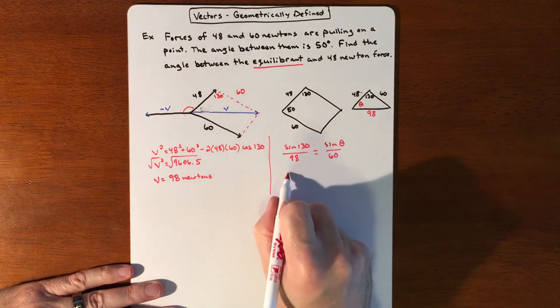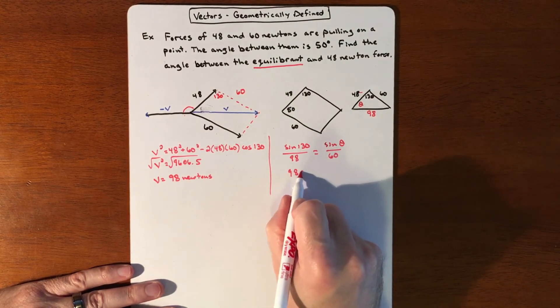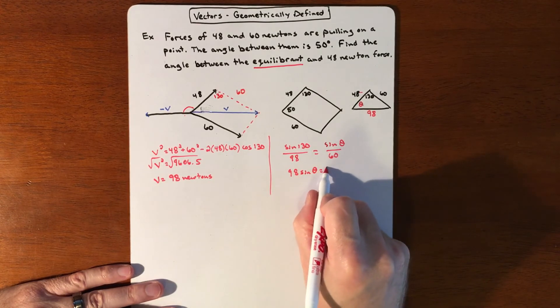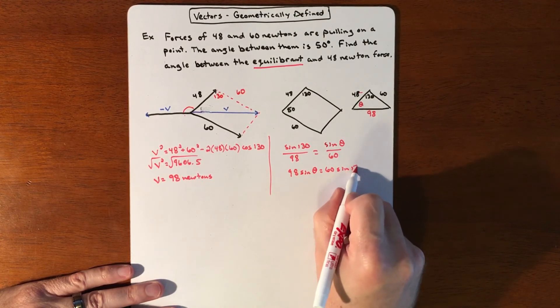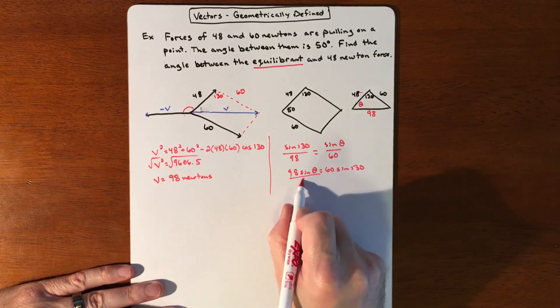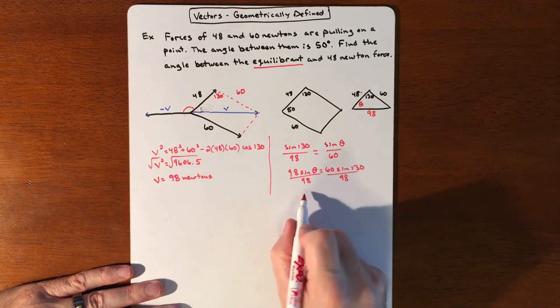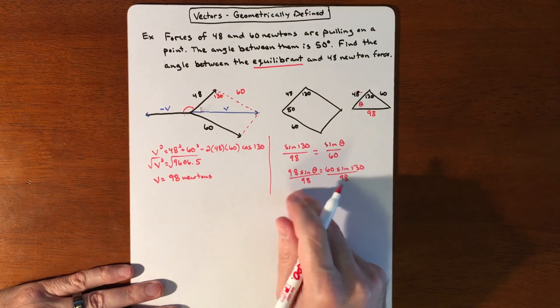We cross multiply, 98 sine of theta, sine of theta equals 60 sine of 130, divide by 98.